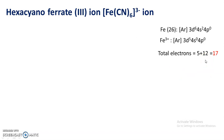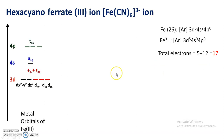Each cyanide ligand donates a pair of electrons, giving 17 electrons in total to be filled in the bonding and antibonding molecular orbitals. Now we draw the molecular orbital diagram for this complex. Energy increases from bottom to top. To the left side of the diagram, the metal orbitals of Fe³⁺ are shown.